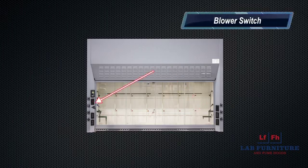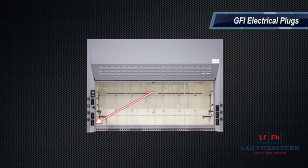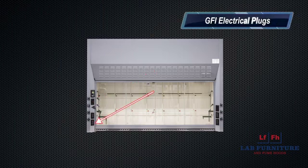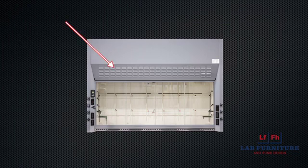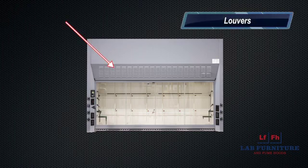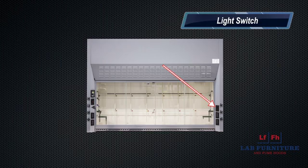If your hood has a blower switch, this will turn your fume hood on and off. Fume hoods have several GFI electrical plugs for using with equipment. Louvers are provided for bypass on constant air volume hoods only. The light switch is connected to your built-in lighting in your fume hood.